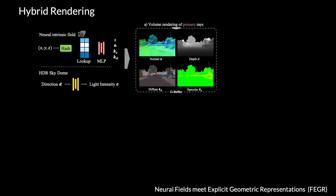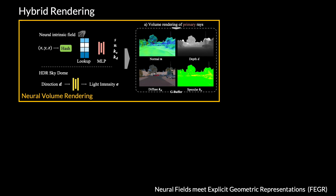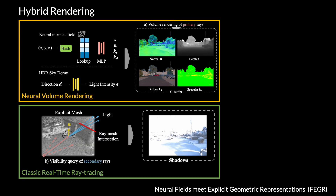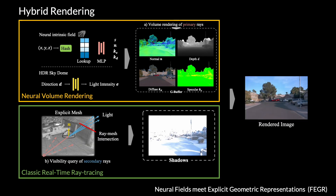It remains an open challenge to perform ray tracing within a neural field. The key to our approach is a new hybrid rendering pipeline, which combines neural volumetric rendering to render the primary rays, and classical real-time ray tracing of meshes to model the secondary rays.